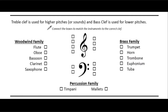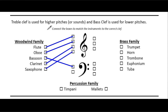The next section talks about which instrument goes to which clef — very important information, since the clefs name your staff. Flute and oboe are treble clef. Bassoon plays in bass clef. Clarinet and saxophone are both treble clef. For the brass family, trumpet and horn are high brass and play in treble clef. Trombone, euphonium, and tuba all play in bass clef.